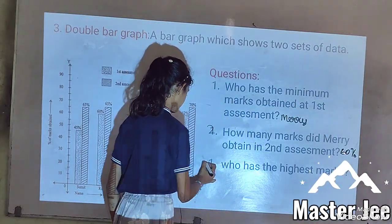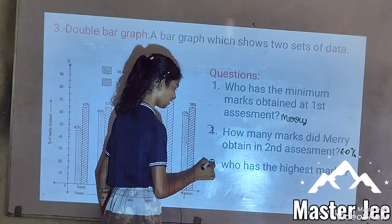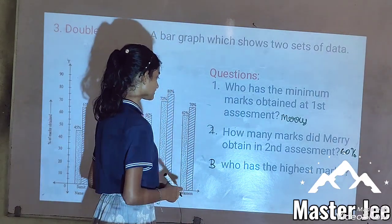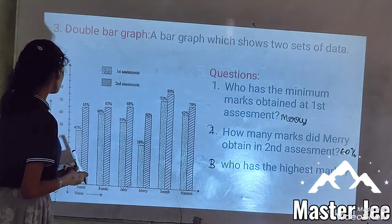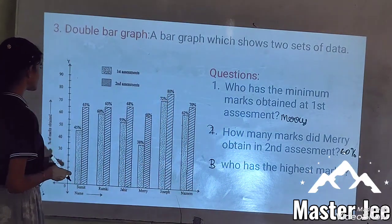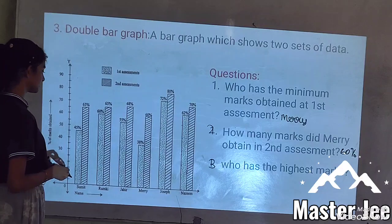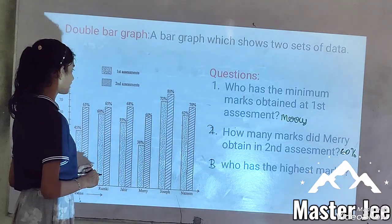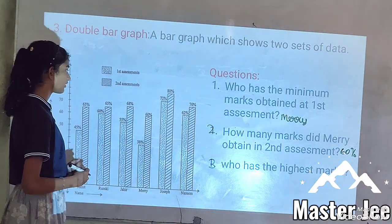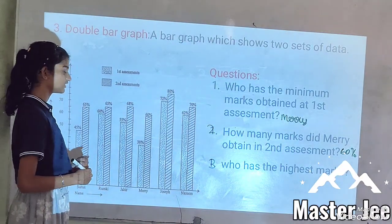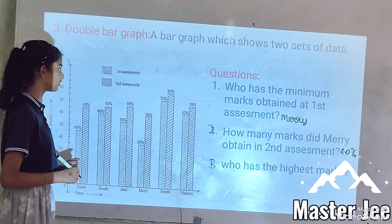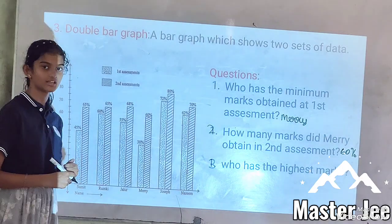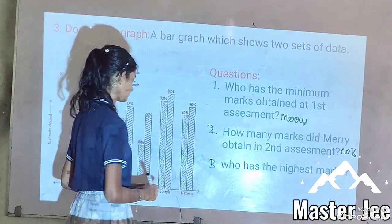Question number three: Who has the highest marks both in first assessment and second assessment? Joseph has the highest marks, achieving 72% in the first assessment and 80% in the second assessment.